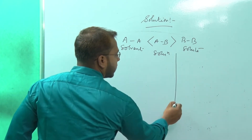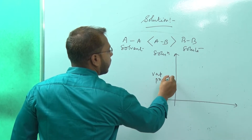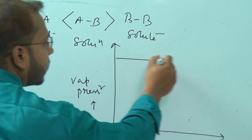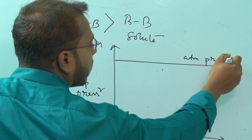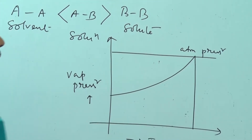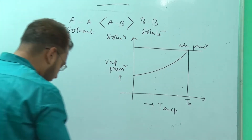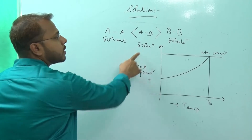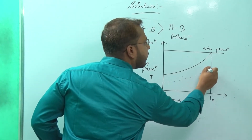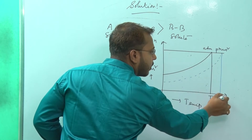If we see the graph — with vapour pressure on the Y-axis and temperature on the X-axis — at atmospheric pressure, the pure solvent touches that pressure at a certain temperature, which is known as the boiling point of the solvent. When a non-volatile solute is added and solute-solvent interaction is stronger, the vapour pressure gets decreased and the solution reaches a higher temperature — that is the boiling point of the solution.